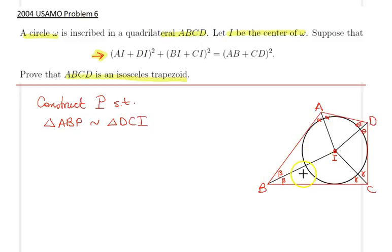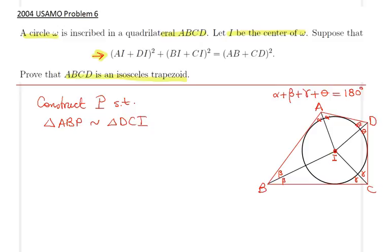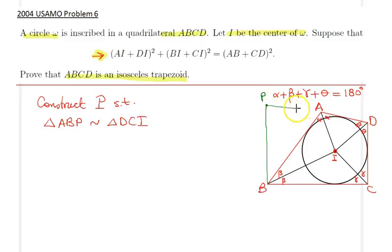Therefore, 2alpha + 2beta + 2gamma + 2theta = 360, or simply alpha + beta + gamma + theta = 180 degrees. The crux move is to construct point P outside the quadrilateral such that triangle ABP is similar to triangle DCI. In this new triangle, this angle is simply gamma and this angle is just theta.